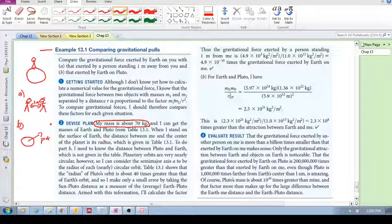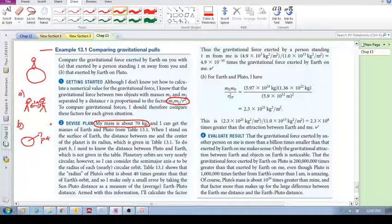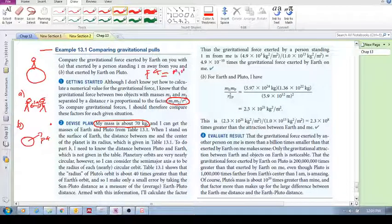Well, first of all, we can use this idea here, right? M1, M2 over R squared. So notice here that the book doesn't say FG equals M1, M2 over R squared. No, it says it's proportional.